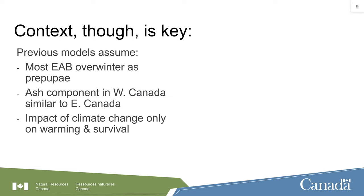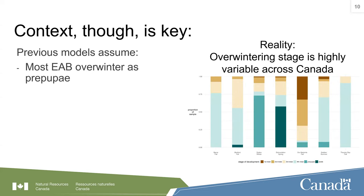Context is important, though. There are caveats on that finding. The previous models are based on pre-pupa — the survival of that one stage going through the winter. Predictions are also based on what happens in Eastern North America and Eastern Canada, where the ash component in the urban forest is dominated by green ash and white ash. We know the ash component is different in Western Canada. Finally, we make predictions about the impact of climate change, but most of those look at the effect of warming — winters not being as cold as they were in the past — and what that does for the survival of insects.